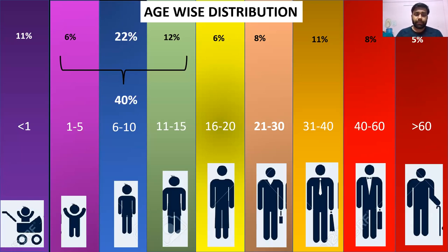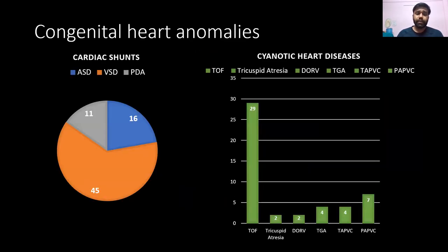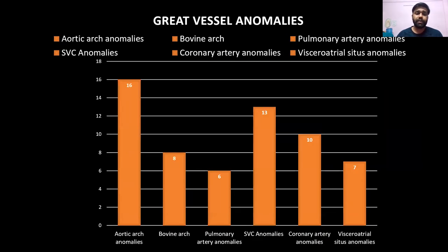Regarding the epidemiological distribution in our cases, 40% of cases ranged from 1 to 15 years of age, and the most common symptom was breathlessness followed by cyanosis. Among cardiac shunts, VSD was the most common, present in 45 of the 100 cases. TOF was the most common congenital cyanotic heart disease, found in 29% of cases. Among great vessel anomalies, aortic arch anomalies were the most common at 16% of cases, followed by SVC anomalies at 13%, and then coronary artery and other anomalies.